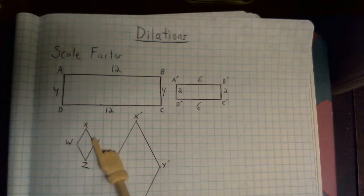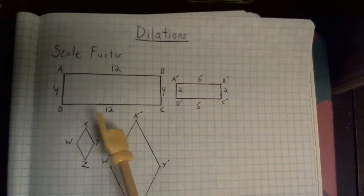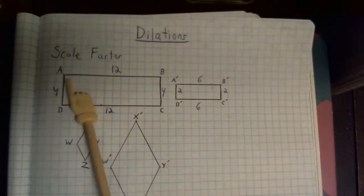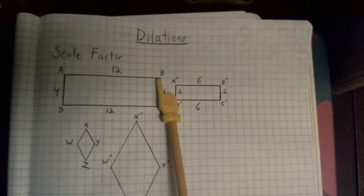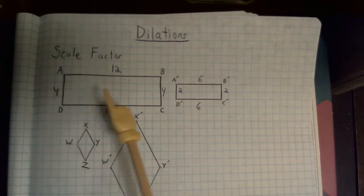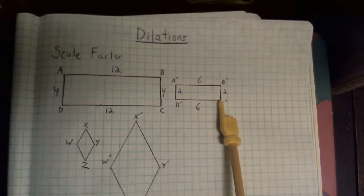If our object goes from small to big, we want our scale factor to be larger than 1. So looking at this particular example, we notice that this large shape has a side length of 12 and 4, and because it's a rectangle, the other sides will match. And it ends up at this smaller shape with a side length of 6 by 2.